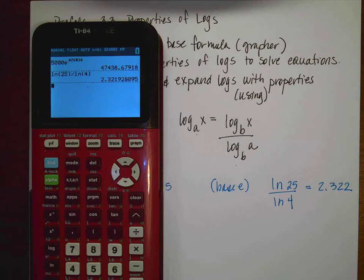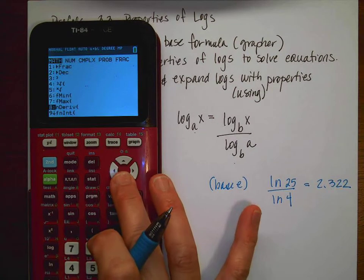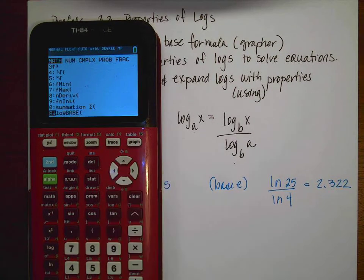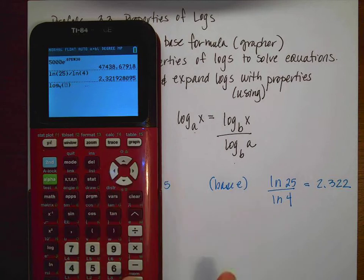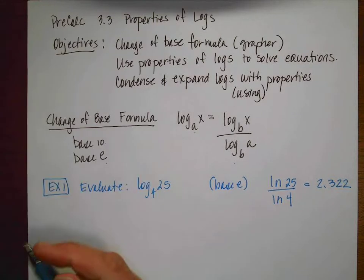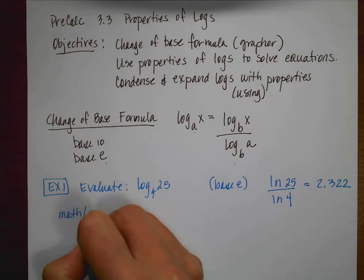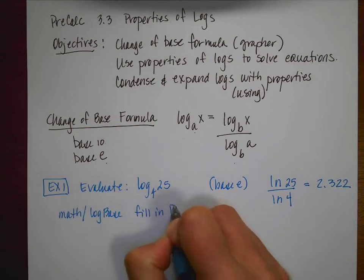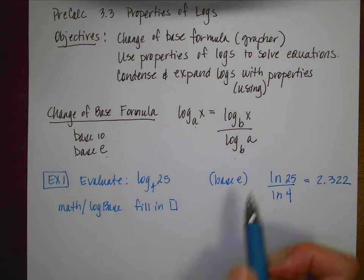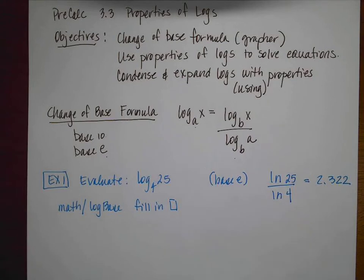Now let me show you how to do it in your calculator. Go to your math button, then go down, and there is a log base option. You get this cool situation where you can just tell it the base is 4 of 25 — and there you get the same answer. So with the newer operating systems it's really easy: math, go way down, log base, fill in the little boxes, which is glorious. The change of base formula has many applications, but now the grapher makes it easy.